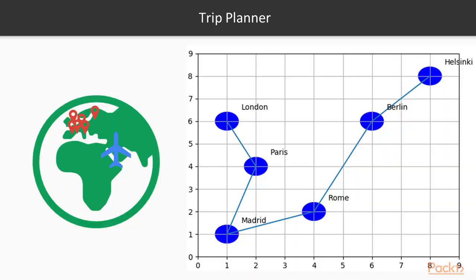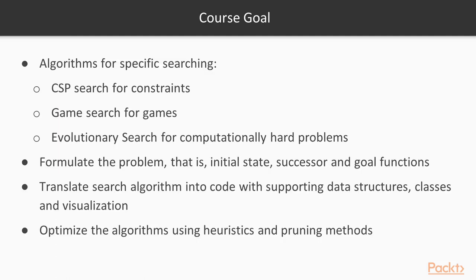At the end, you will try to practice the concepts you would have learned in this section by developing a trip planner application by yourself. In this course, you will learn algorithms for specific searching: constraint satisfaction problem search for applications with constraints, game search for games, and evolutionary search for computationally hard problems. You will learn how to formulate problems for different applications and understand how to translate the search algorithms into code with supporting data structures, classes, and visualization. Finally, you will also learn how to optimize these algorithms using different heuristics and pruning methods.